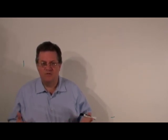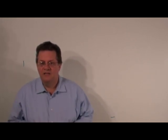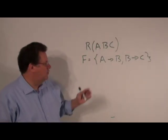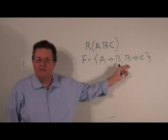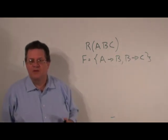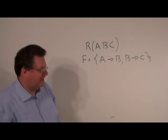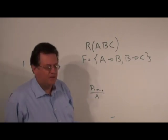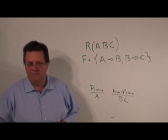Basically, an attribute will fall into one of those two categories. Let's take a look at a little example. Here we have a relation R(A, B, C) with functional dependencies A determines B and B determines C. As you can see from this example, A is obviously the key. So we would say A is prime and B and C are non-prime.